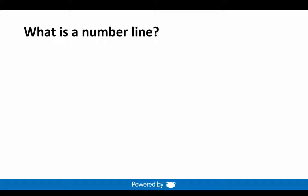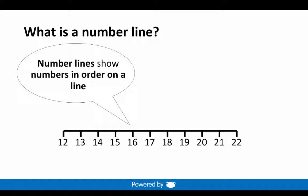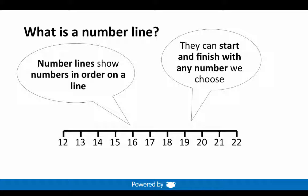What is a number line? Here is an example. Number lines show numbers in order on a line. They can start and finish with any number that we choose. This example starts with 12 and finishes with 22.